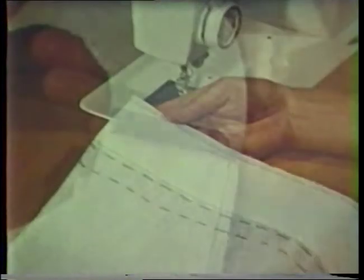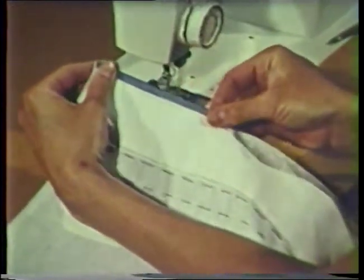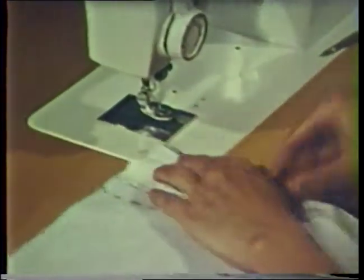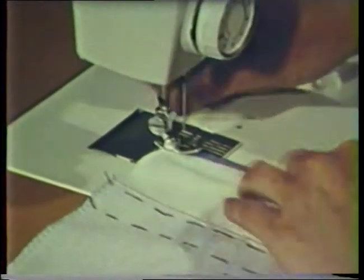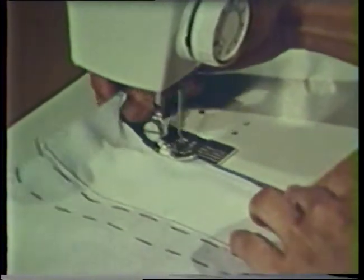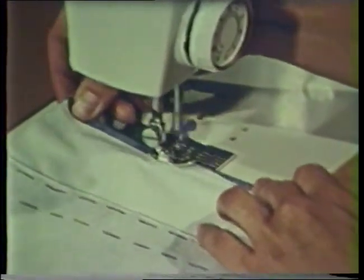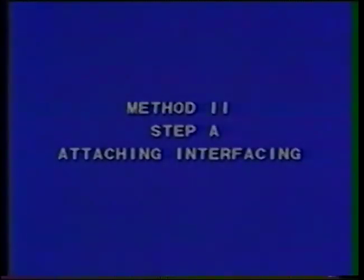One way to finish the raw edge of the facing is to turn and edge stitch. Fold the edge of the facing over the interfacing along the first line of stitching and finger press. This should be about one fourth inch. Machine stitch close to the folded edge. Continue stitching around the back neck facing and down the other side.